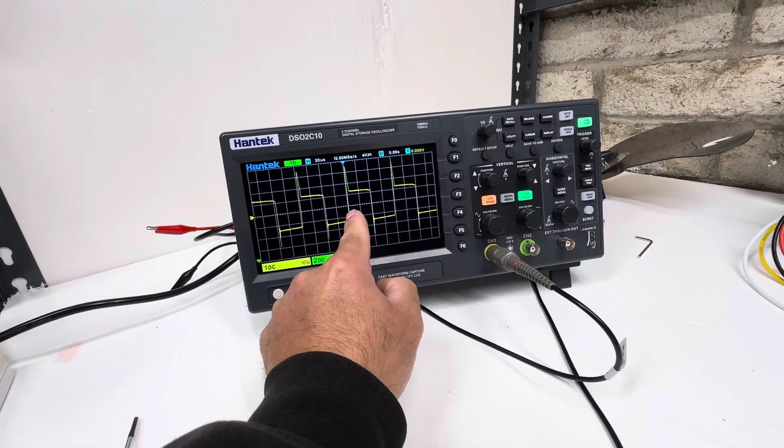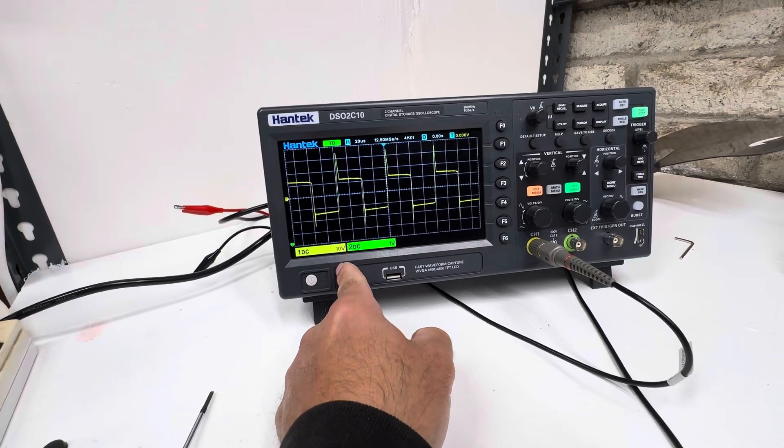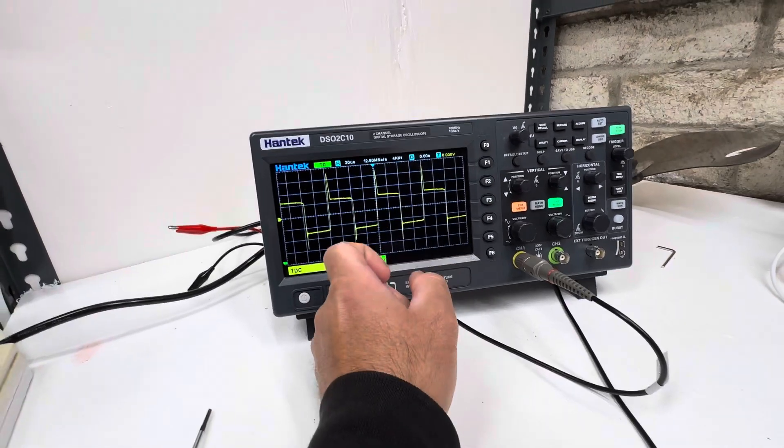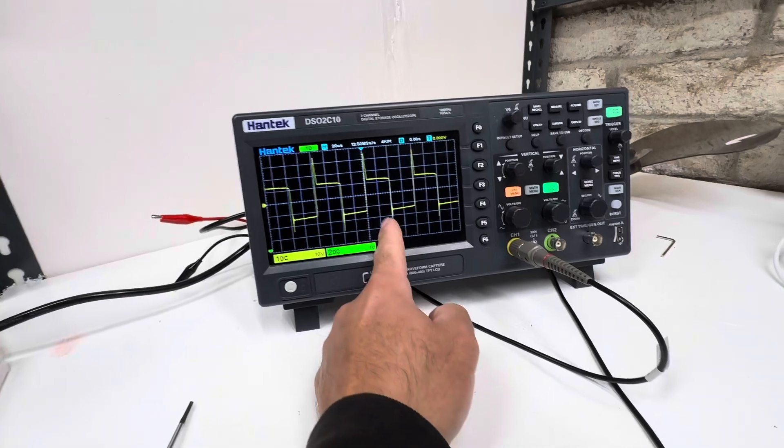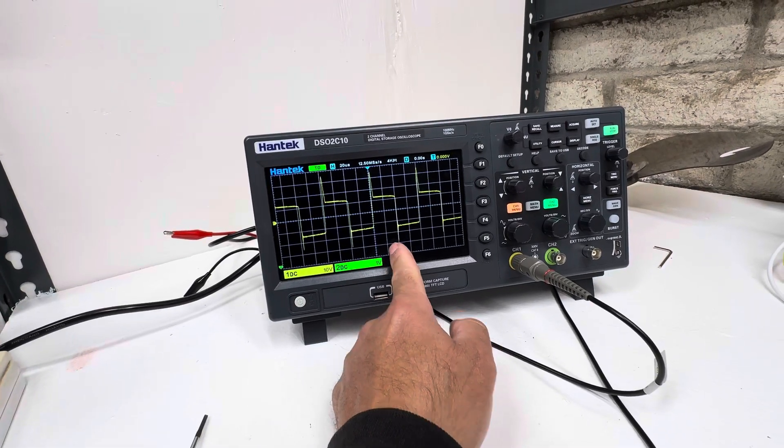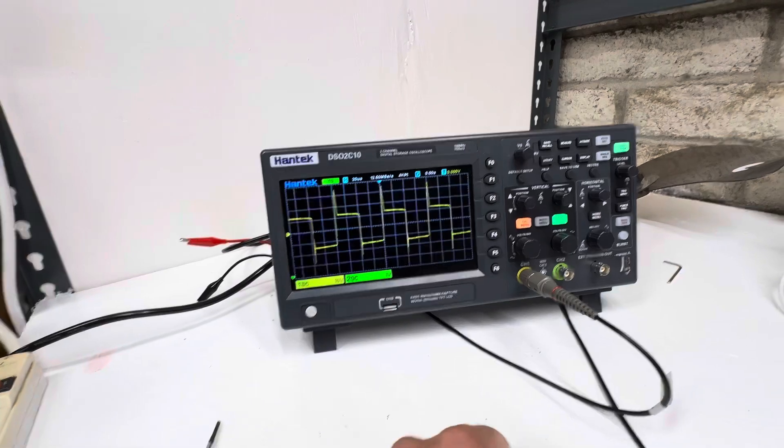Each square is on 10 volts on the scale, so 10, 12, and then this comes up. This is what we're using to charge the battery right here at the bottom. This is on the 20 microsecond scale.